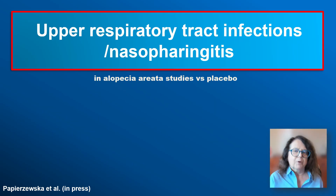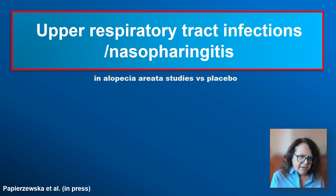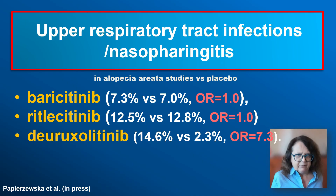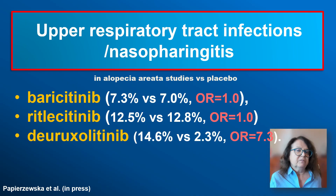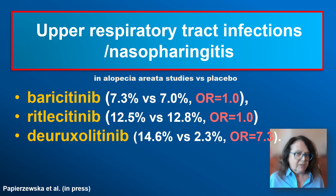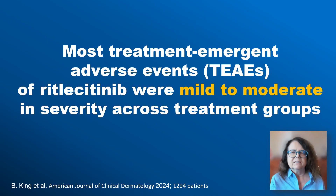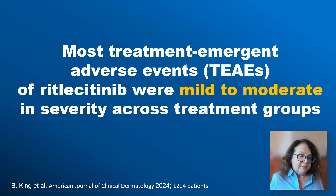We often fear about possible infections associated with immunosuppressive medications. However, we compared treatment with placebo and found that for baricitinib, approximately 7.3% of patients had infections during therapy, while the placebo number was 7%. This was very comparable. For ritlecitinib, it was 12.5% during treatment and 12.8% in the placebo group. These differences were not statistically significant. For deuruxolitinib, there is a difference between the treatment and the placebo group. Most treatment-emergent adverse events associated with baricitinib and ritlecitinib are mild to moderate and transient.